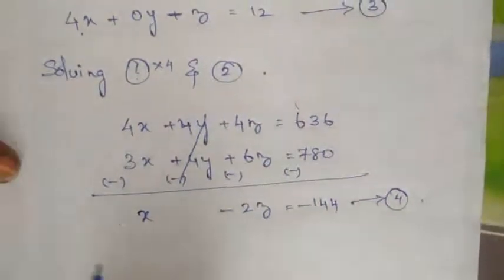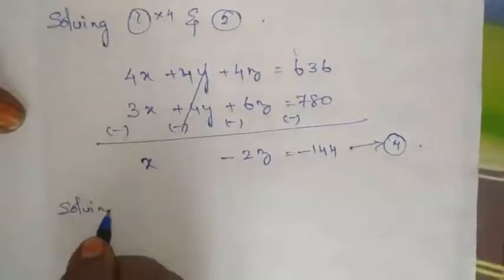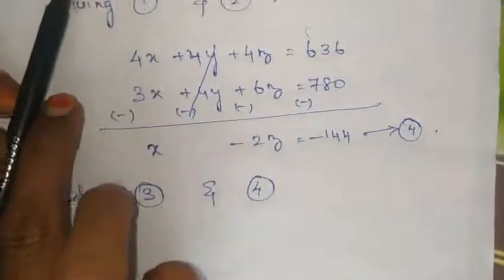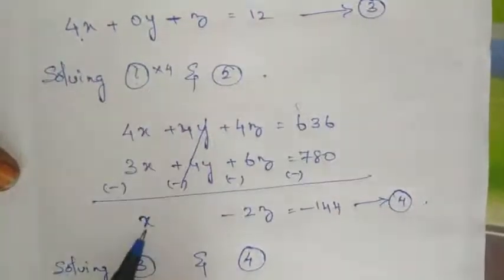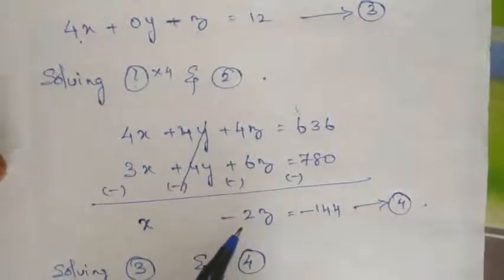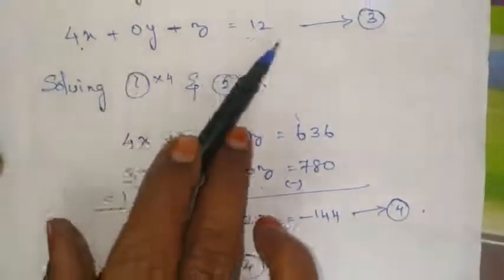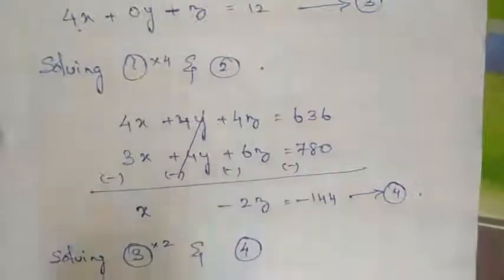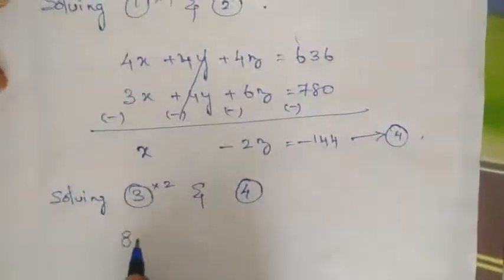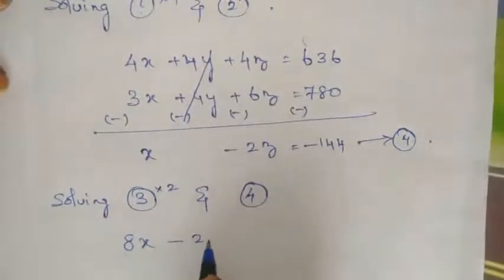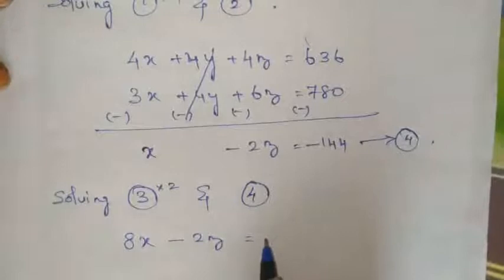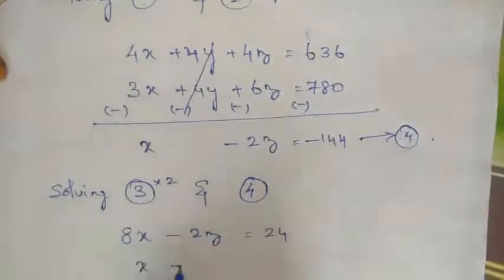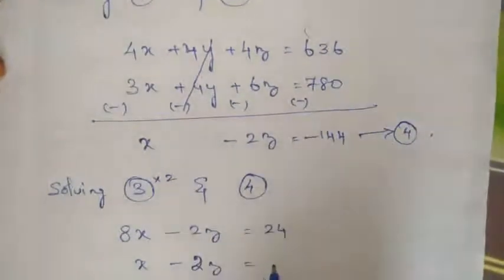Solving the resulting equations to eliminate another variable. Combining gives x minus 2z equals minus 144.